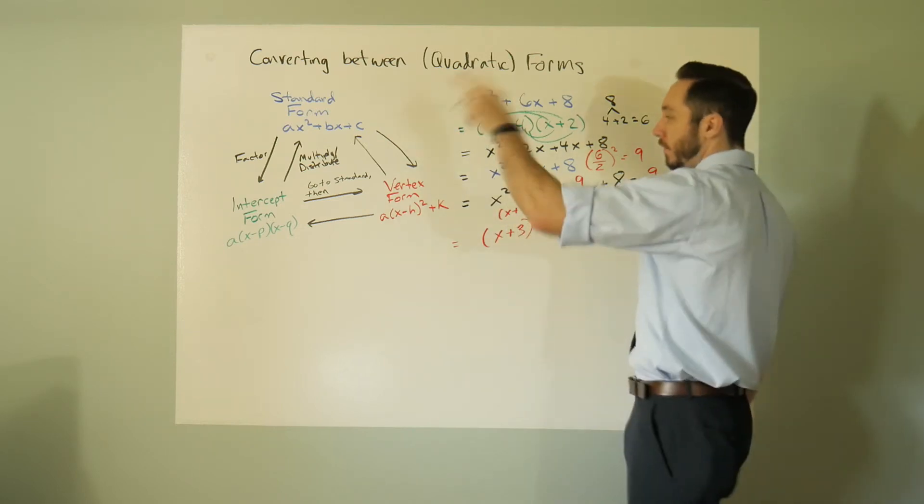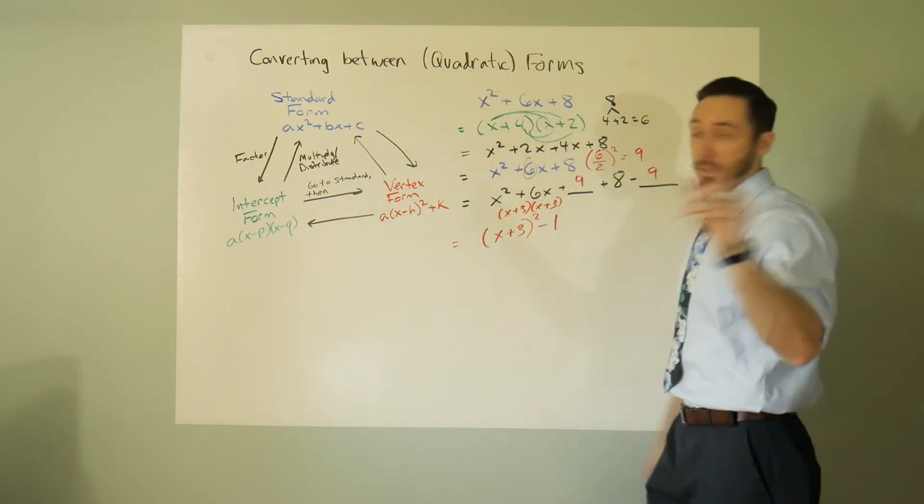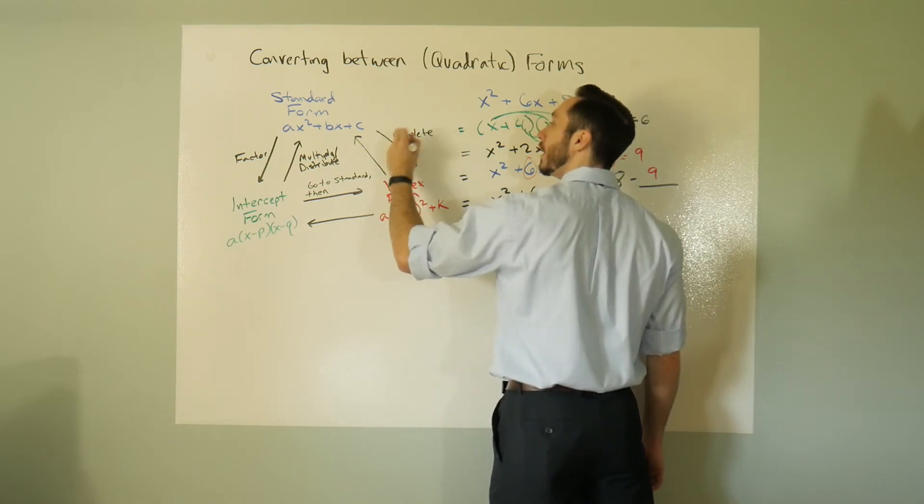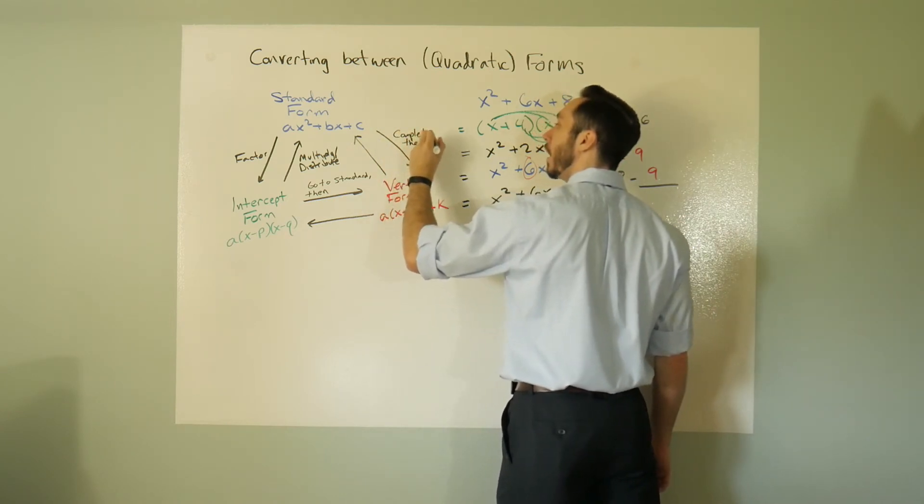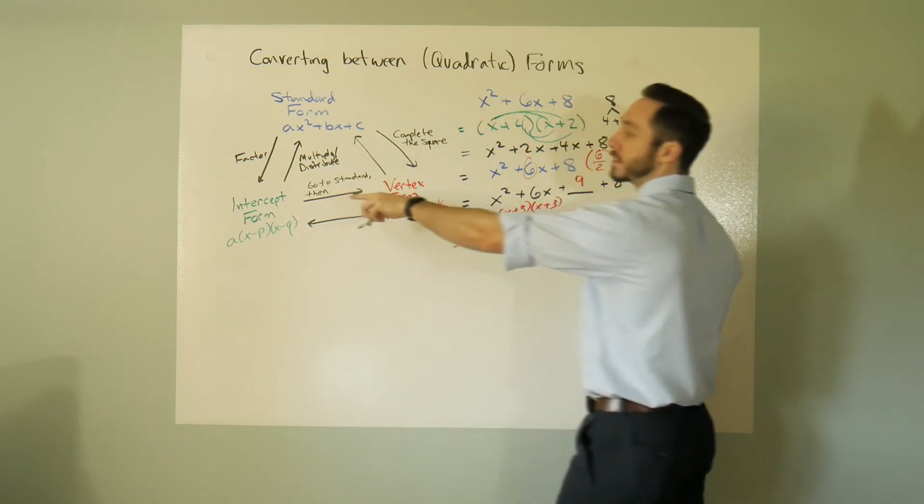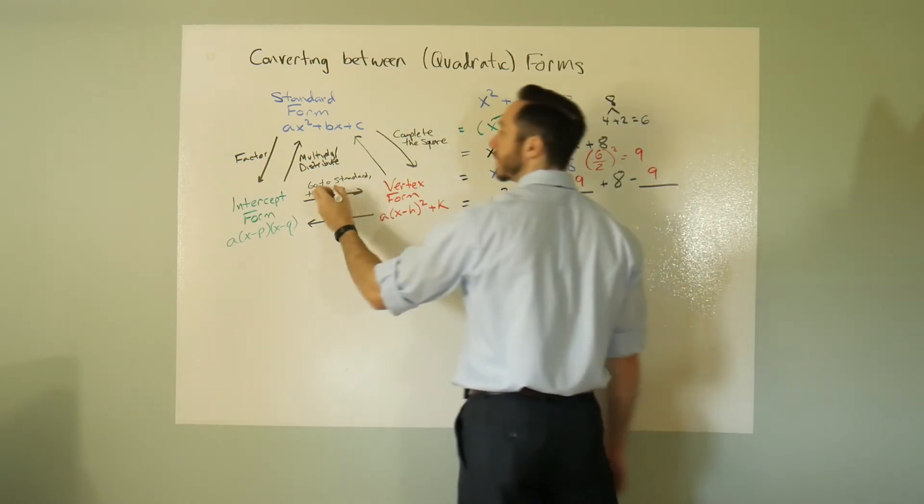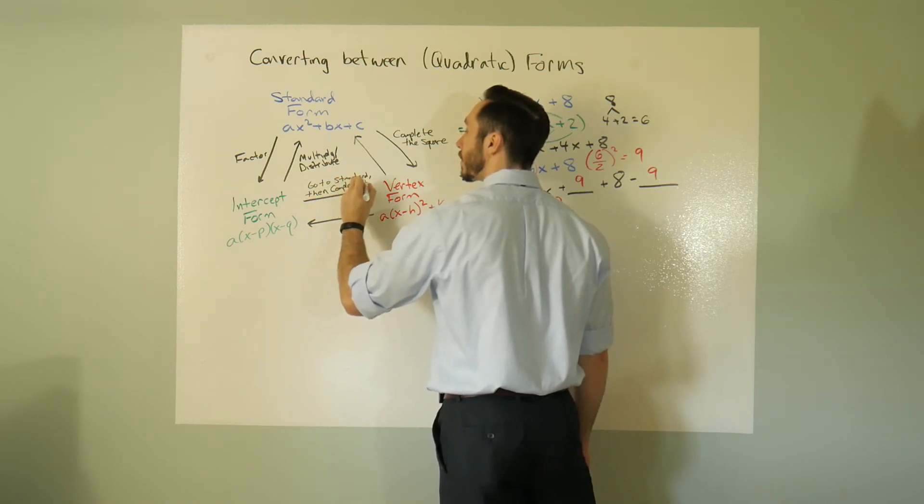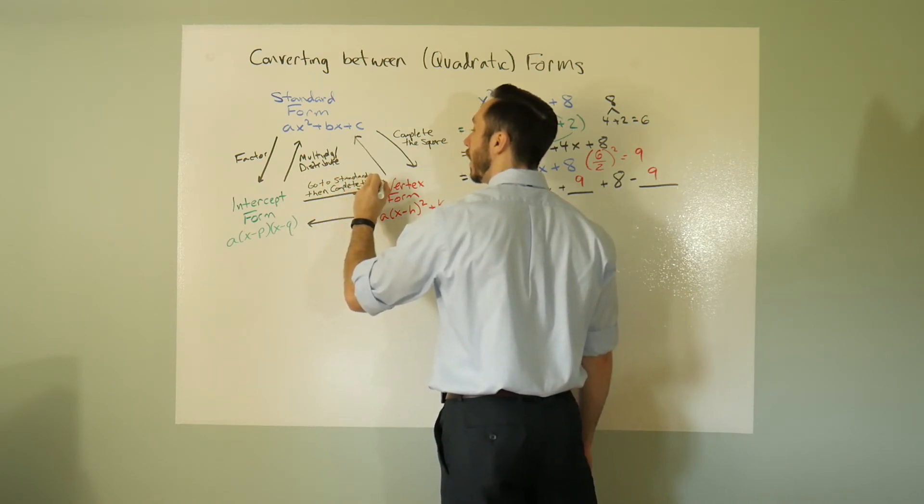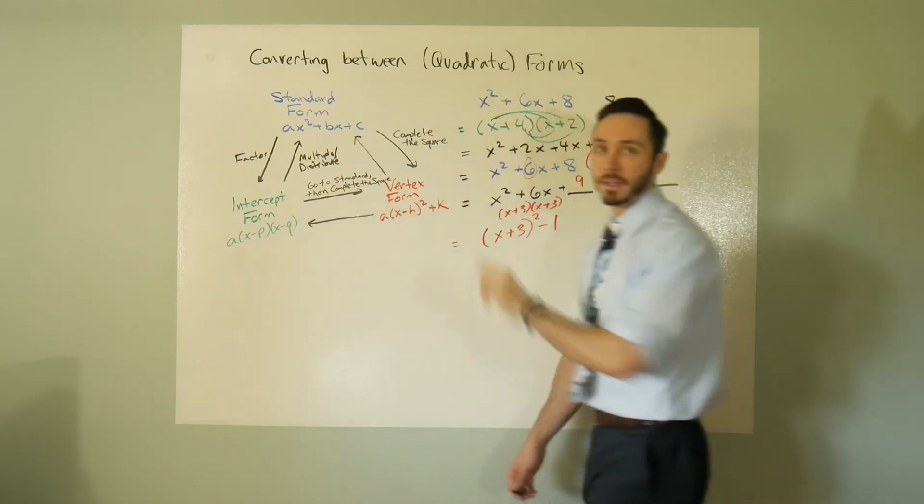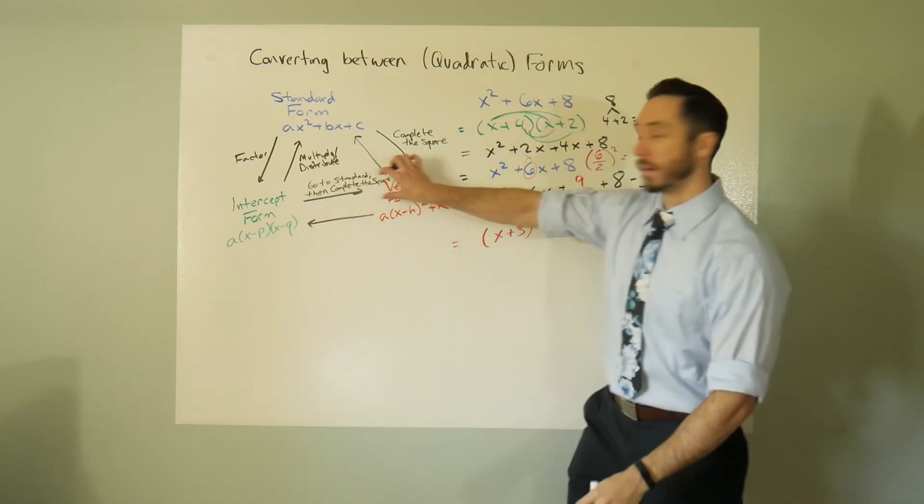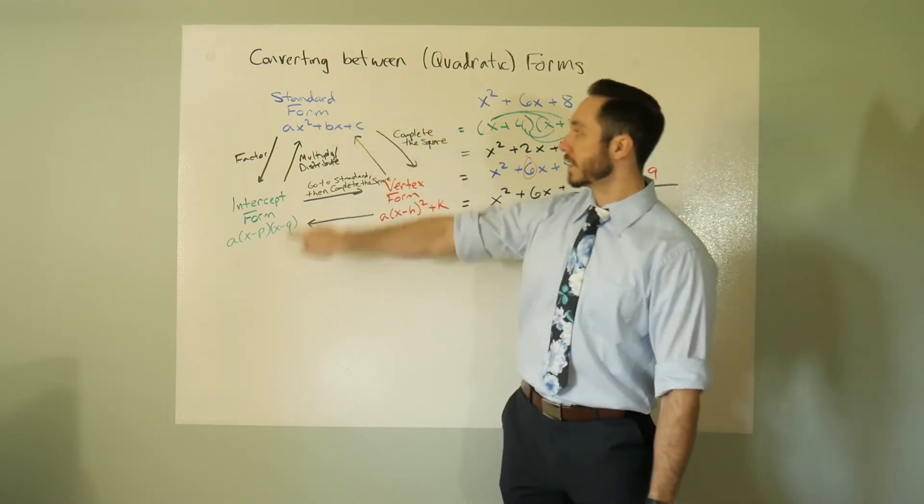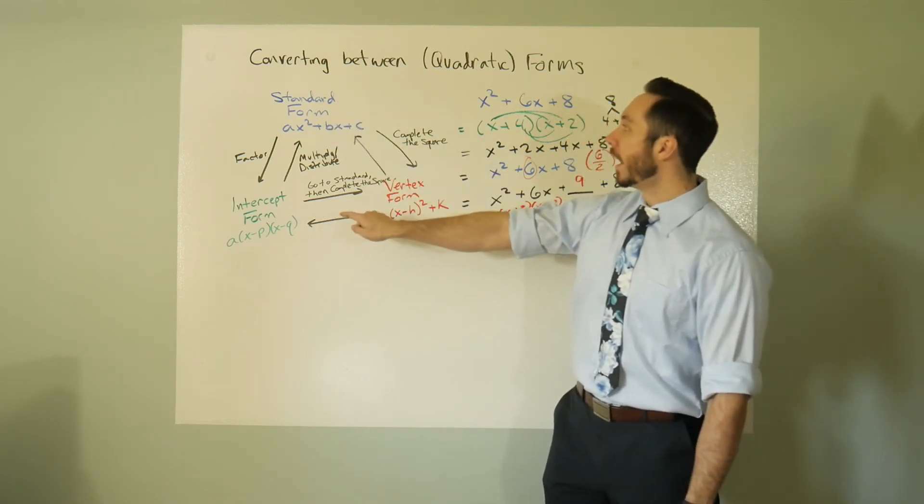So in terms of my little chart over there, standard form to vertex form: completing the square. Complete the square. So go to standard then complete the square if you want to go this way. This route is effectively useless, I wouldn't even bother writing this in, but I do want to be all inclusive here.